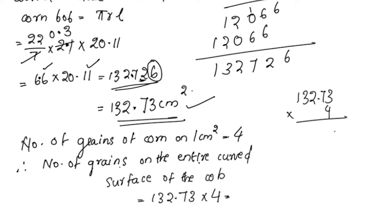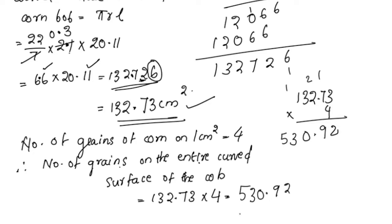132.73 × 4: 4 × 3 = 12, carry 1; 4 × 2 = 8 + 1 = 9... wait, let me recalculate: the result is 530.92. So the total number of grains on the entire cob is approximately 530.92.